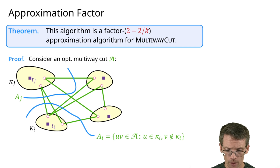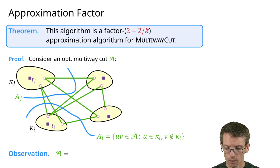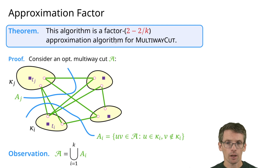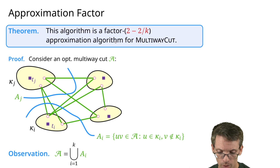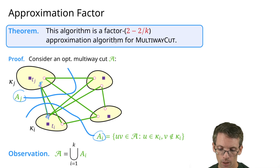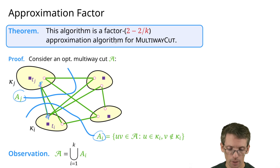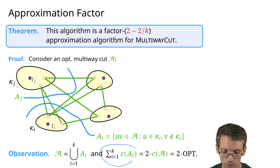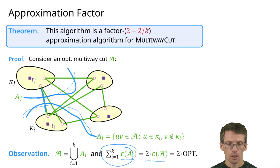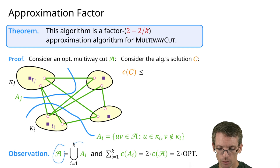This observation is purely about the optimal cut, not the algorithm. The optimal cut A is the union of the a_i, but taking this union we count edges multiple times: any edge between component i and component j appears in both a_i and a_j, so every edge is counted exactly twice. Therefore the sum of the costs of all the a_i equals 2 times the cost of A, which is 2·OPT.